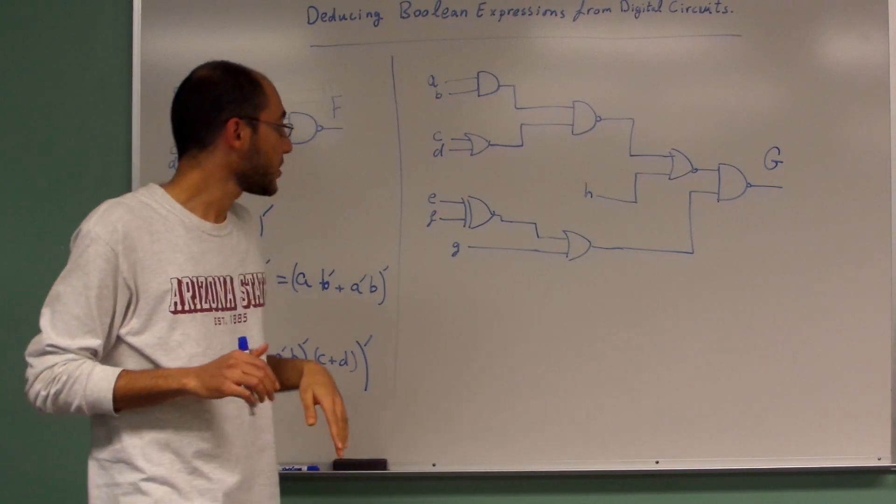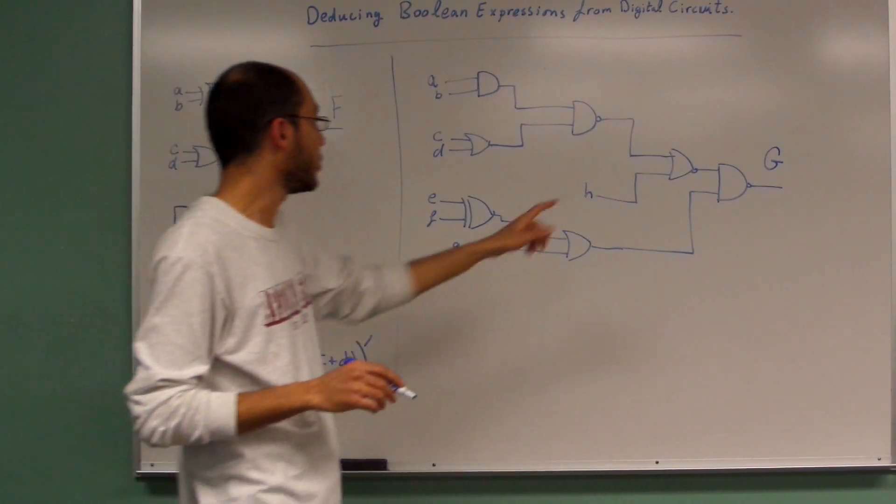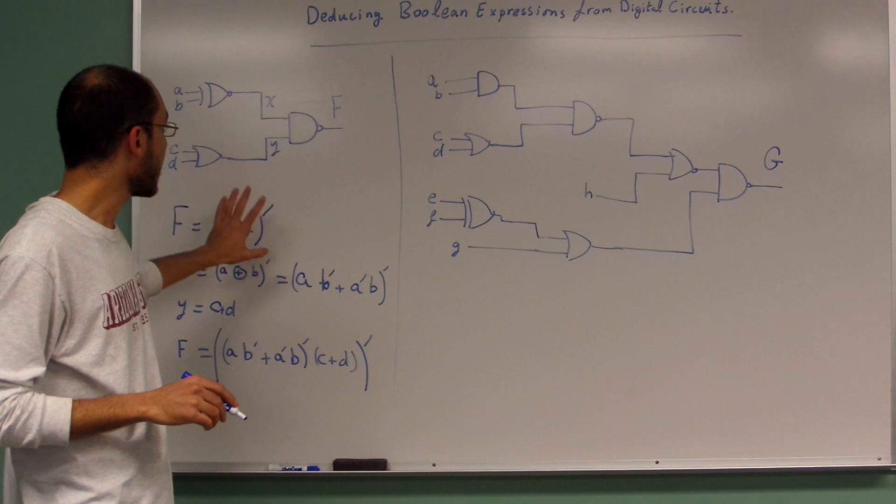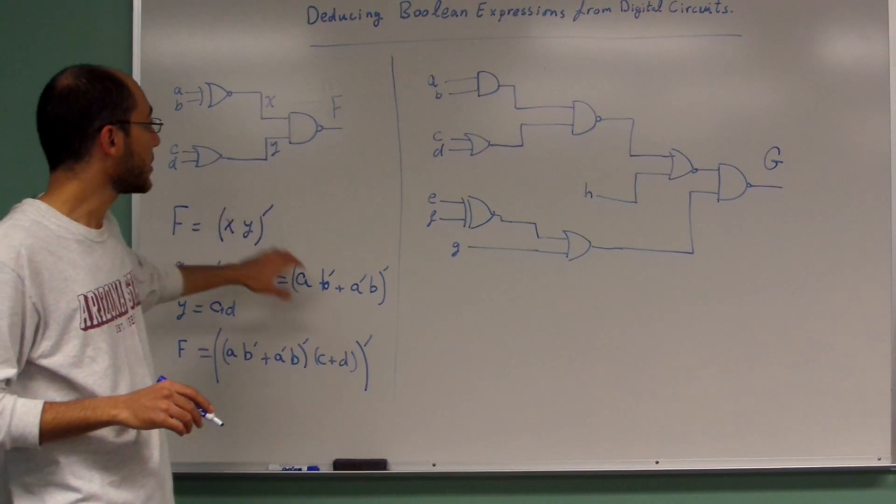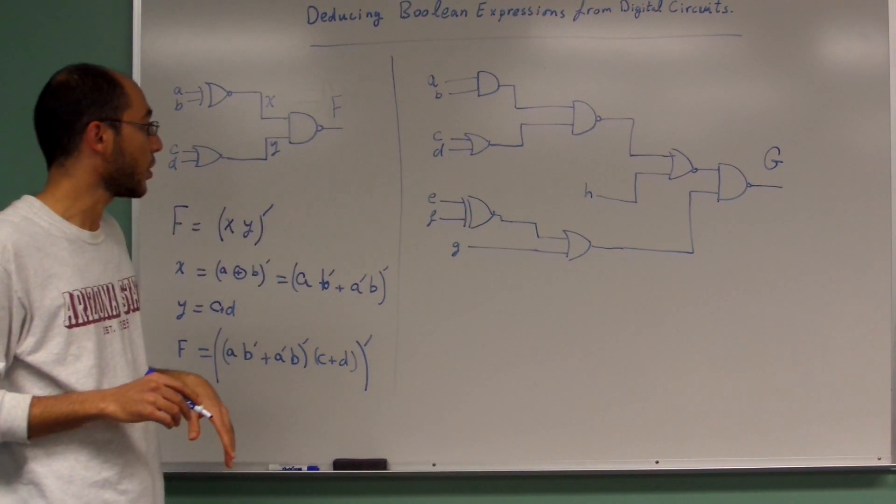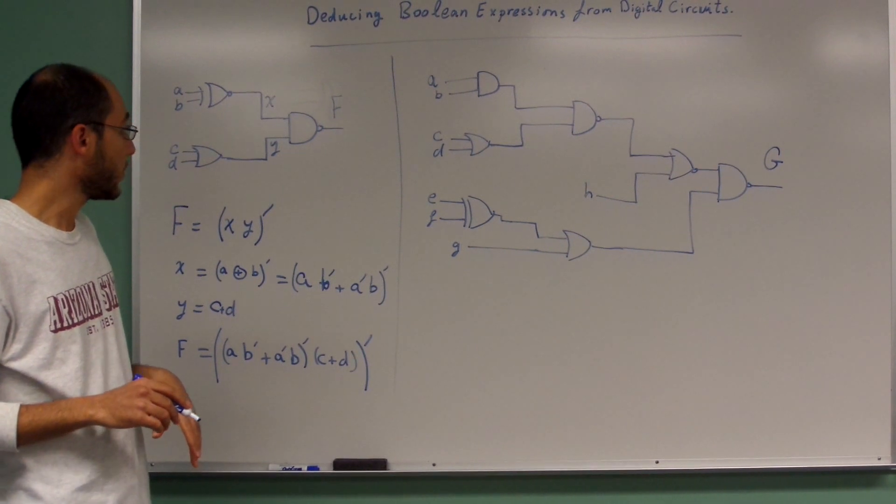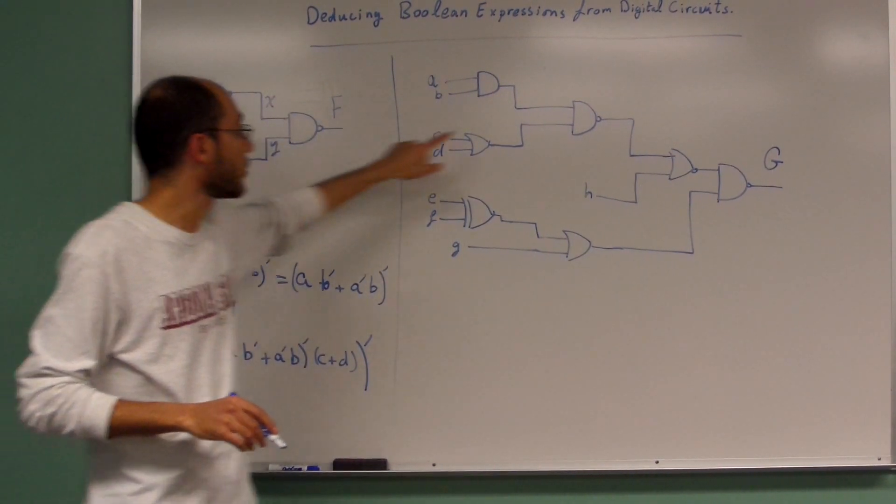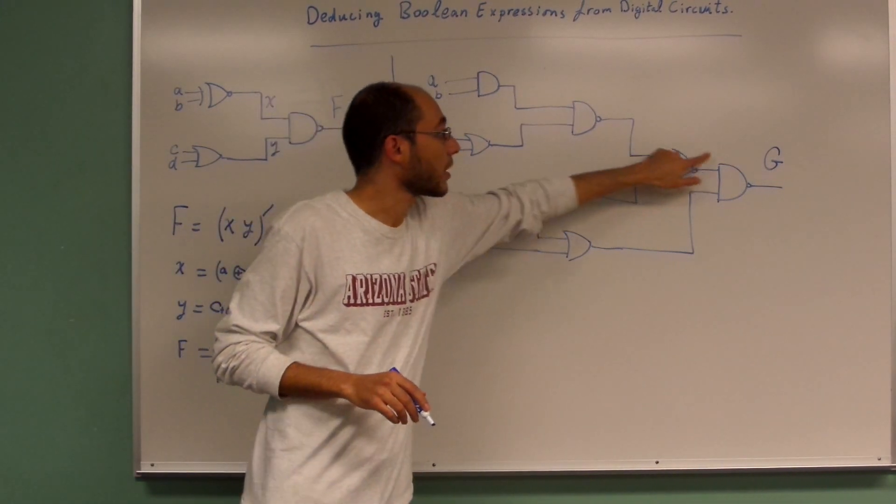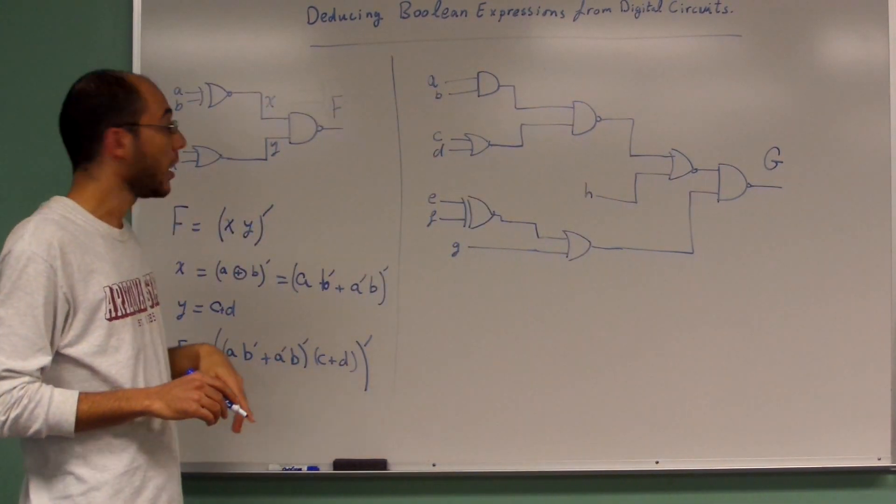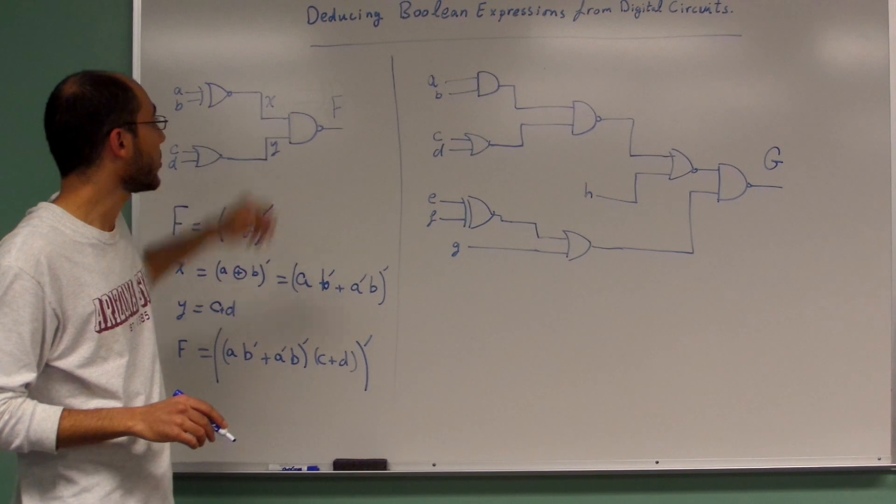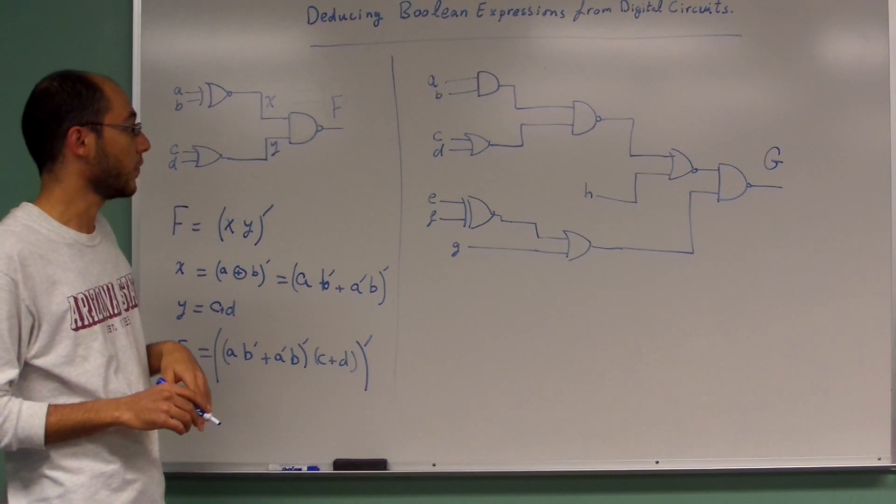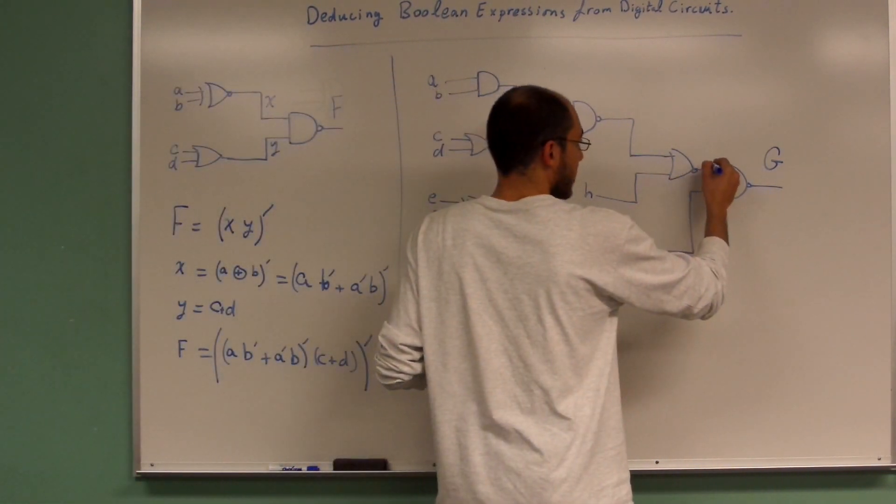So let's move on to the problem G. The steps that I'm going to follow here are the same steps I followed before. However, since we do not have any nomenclature for the outputs of these gates, I'm going to name them.